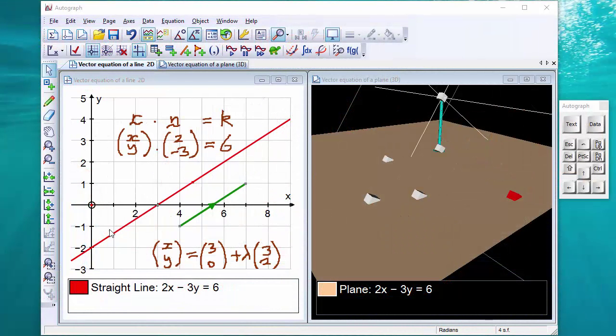There are many forms for the equation of a straight line in two dimensions, but there are two that involve vectors, and we're going to have a look at those now.